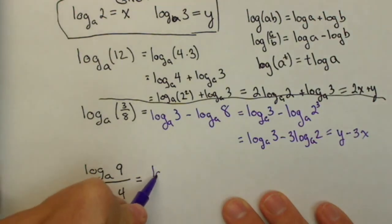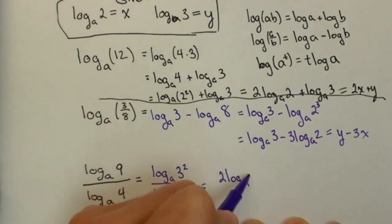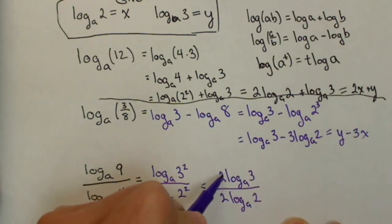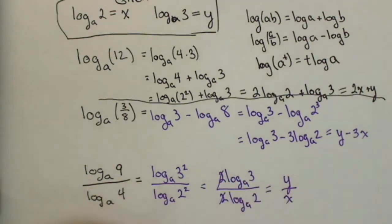All I can really do here is I have log base a of 3 squared over log base a of 2 squared. I can pull those exponents out front. So I have 2 log base a of 3 over 2 log base a of 2. If I want I can cancel those 2's and what I get is y divided by x.